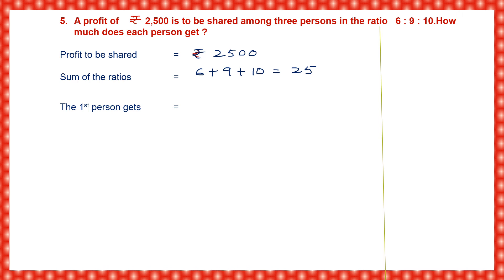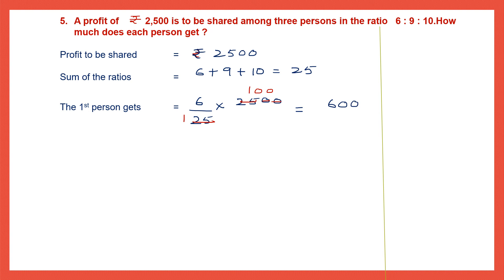The first person gets the first term 6, divided by the sum of the ratios 25, multiplied by 2,500. Cancel: 25 into 100 gives 2,500. Multiply the numerators: 6 into 100 is 600. The first person gets a profit of 600 rupees.